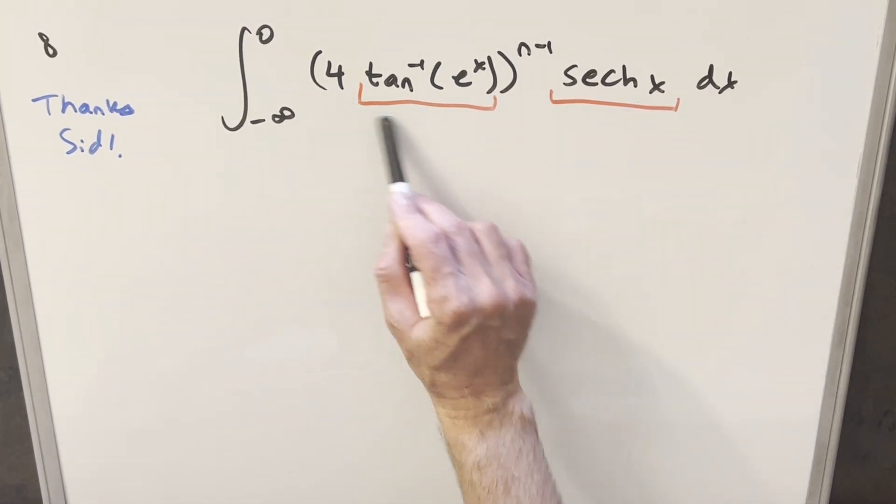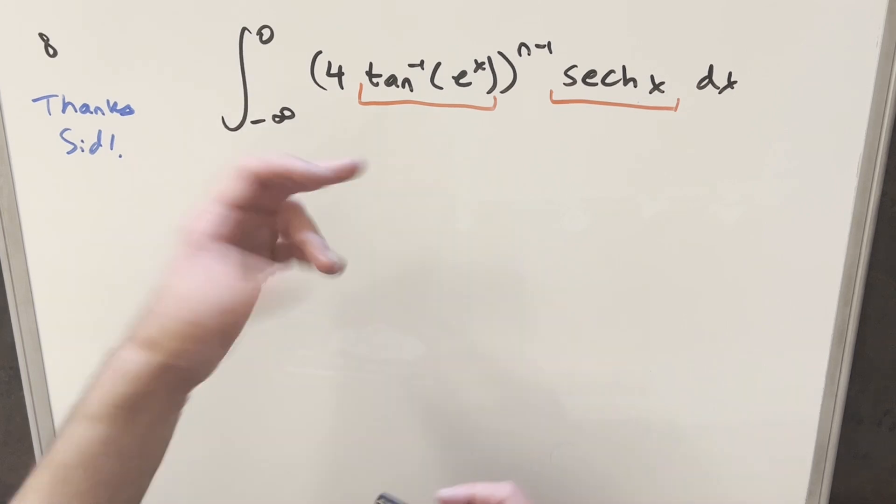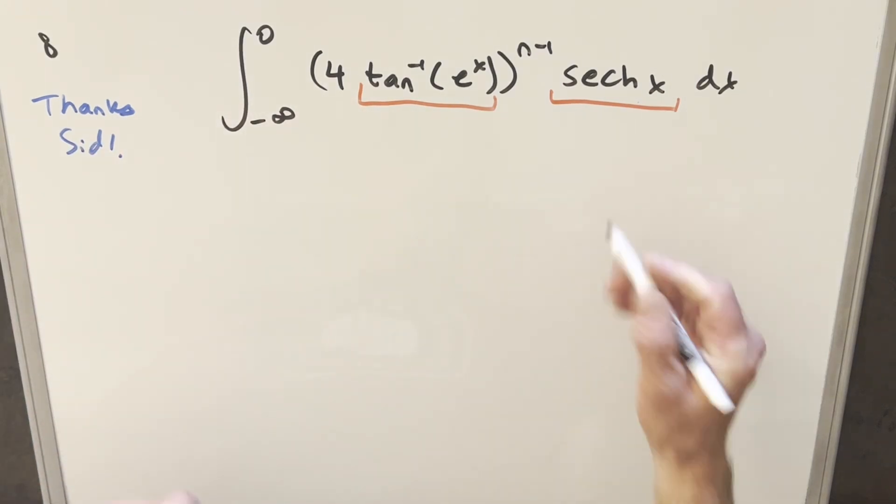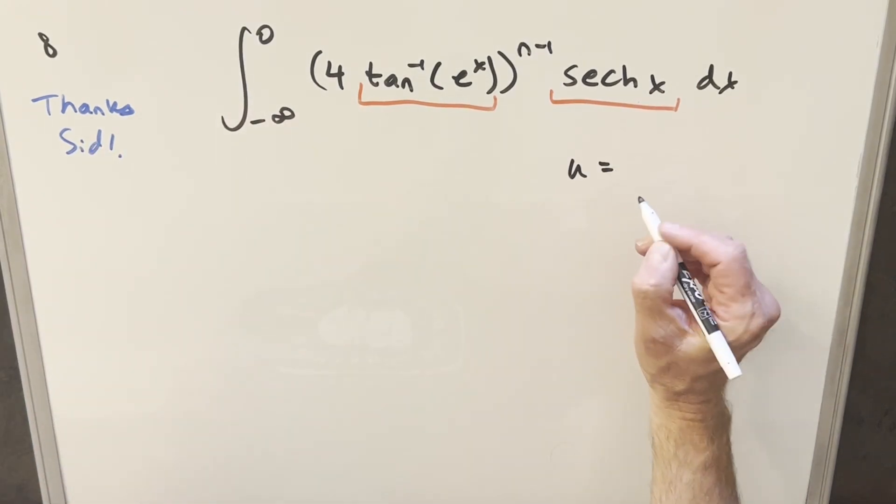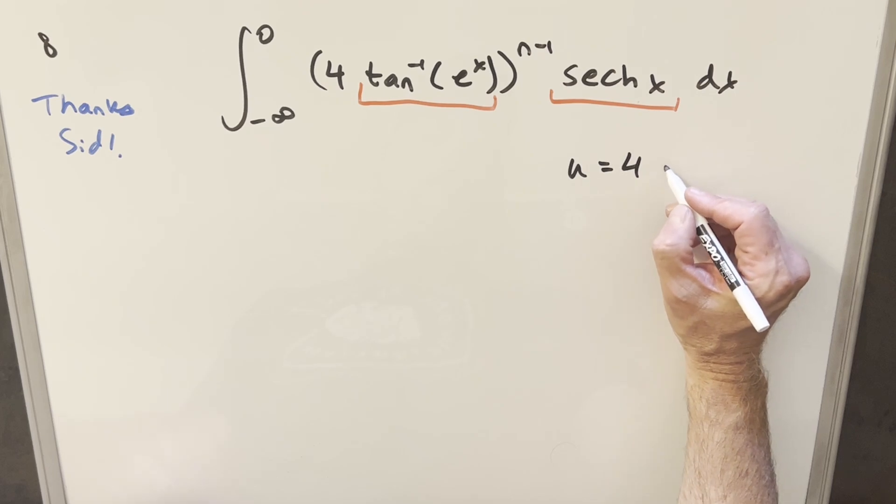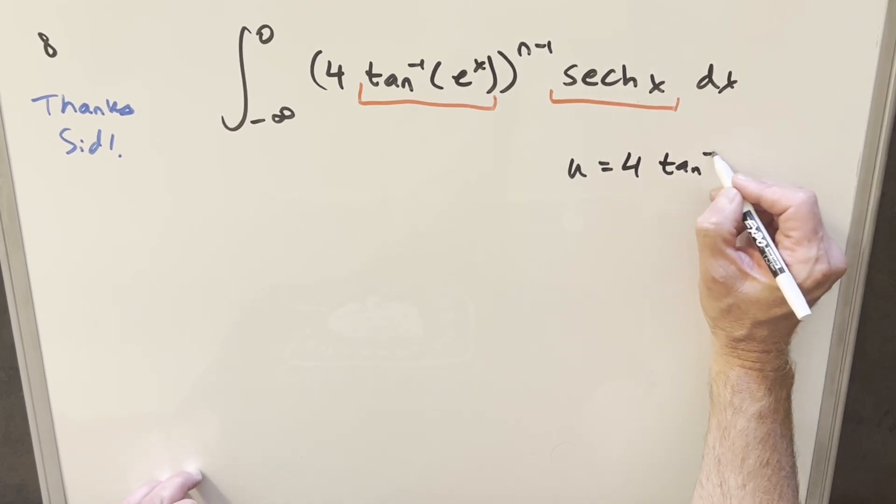I know it's not going to be quite exactly this whole thing here but I want to do a u substitution to clean it up. So we might as well take this four with us and just do the u substitution as u equals four times arctan e to the x.